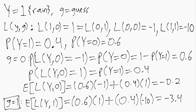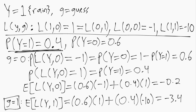Through this example we can see how both the probabilities — in other words, the distribution of the random variable — and the loss function each directly affect our optimal prediction.